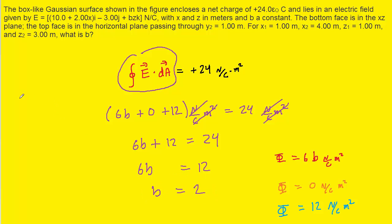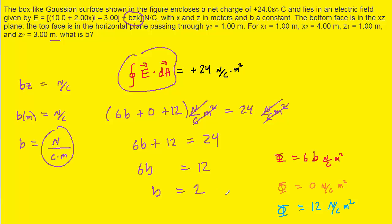We need to go back and find the unit of b. Looking at the term bz in the electric field expression — since the electric field must have units of newtons per coulomb, and z is measured in meters, we have b multiplied by meters equals newtons per coulomb. Dividing both sides by meters, b has units of newtons per coulomb per meter. That is the correct unit for b, and we now have the final answer: b equals 2 newtons per coulomb meter.